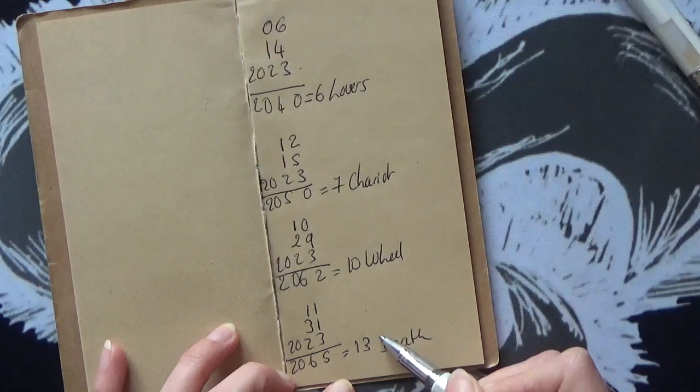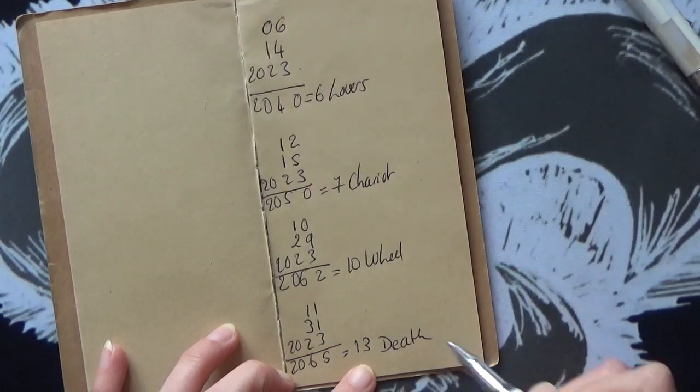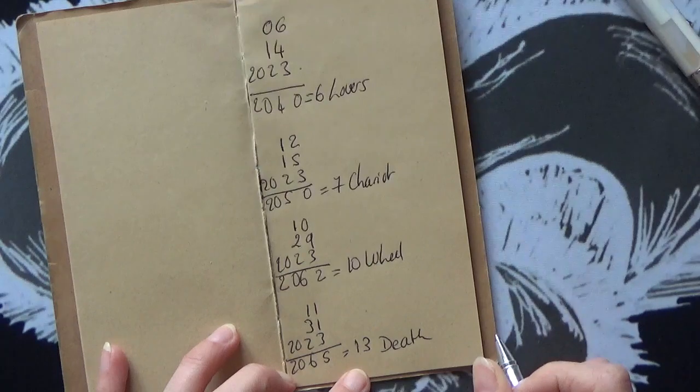So as I said, unless you go above 22, then you can just keep it as is, because we've got 22 major arcana.